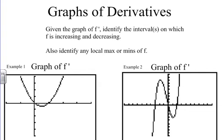Graphs of derivatives. Given the graph of f prime, identify the intervals on which f is increasing and decreasing. We're going to be given f prime and identify the intervals in which f is increasing and decreasing. Here is a graph of f prime. When you determine this, we're going to think back to what do we know about f prime and f — what is the correlation?